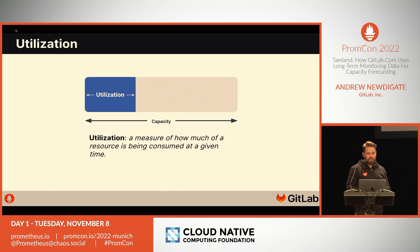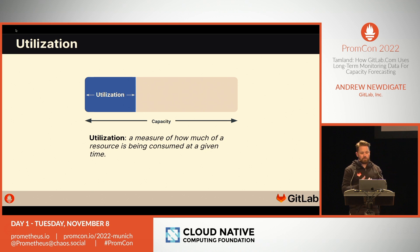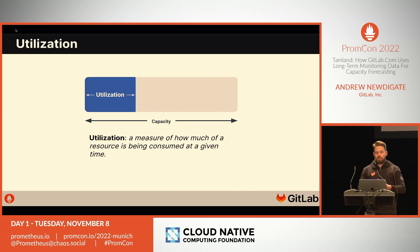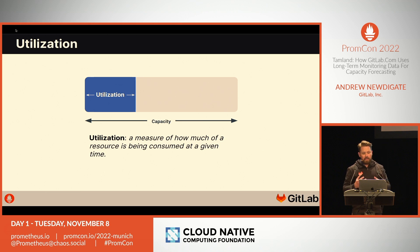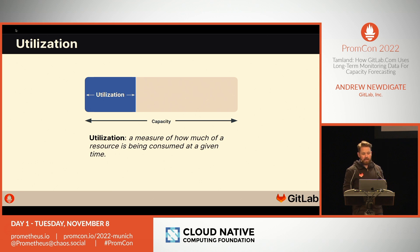The next definition is utilization — a measure of how much a given resource is being consumed at any moment in time. Utilization always has a unit of measure; for example, we might measure it in open files, bytes, or database connections. Capacity is, for any given resource, the maximum utilization possible — for example, the maximum number of files a process can open, or the maximum number of database connections allowed in a pool. Utilization percentage is utilization expressed as a percentage of capacity, with 0% being unutilized and 100% being at capacity. All of our utilization metrics are expressed in this normalized form.